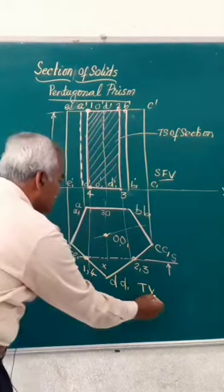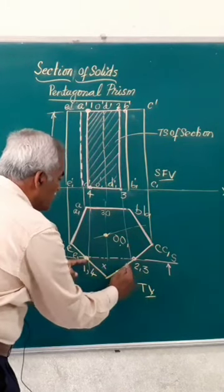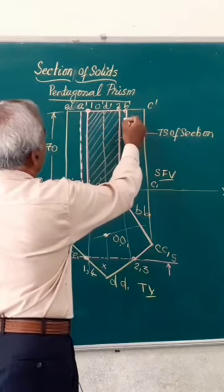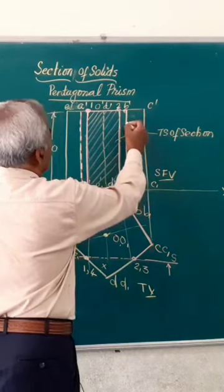And here friends, remember this portion will be shown hatched. Here, these two lines are darkened lines BB, and these are the darkened lines.